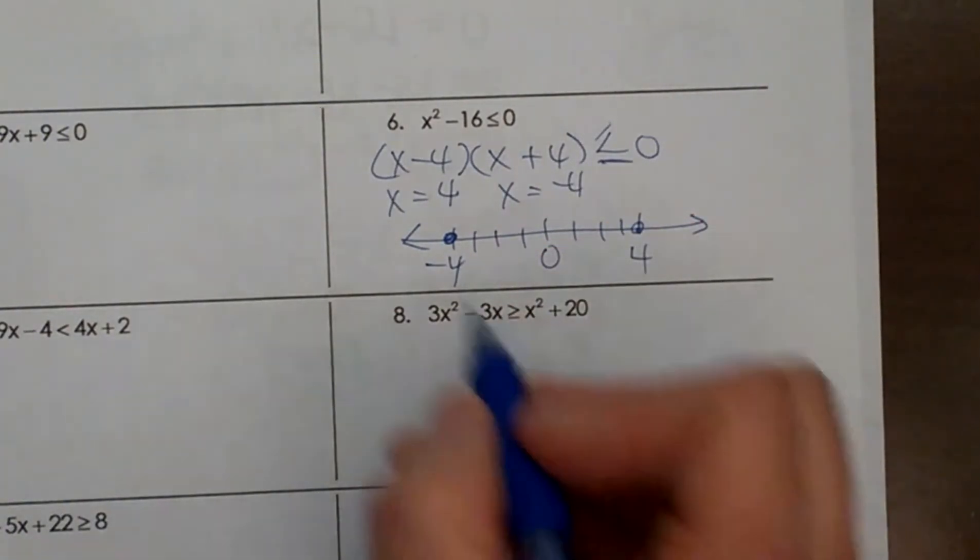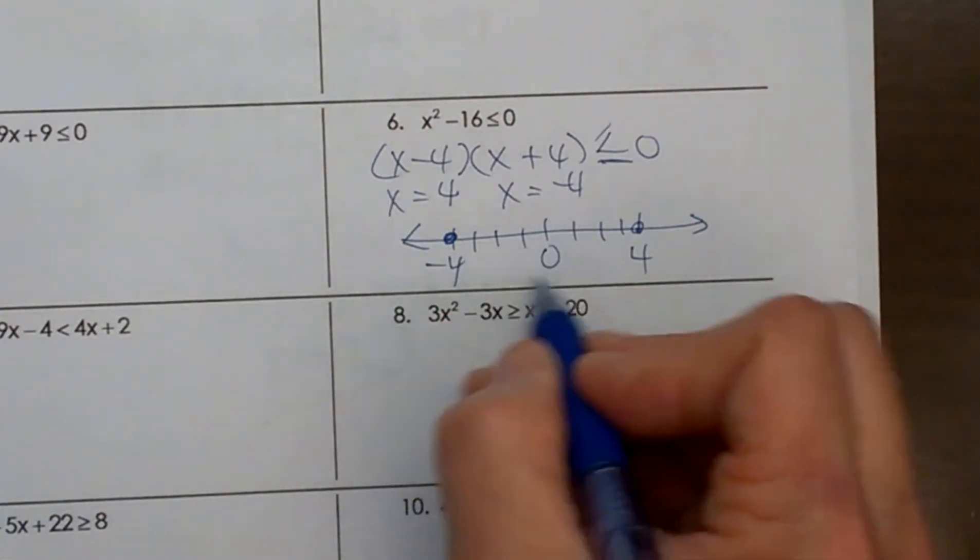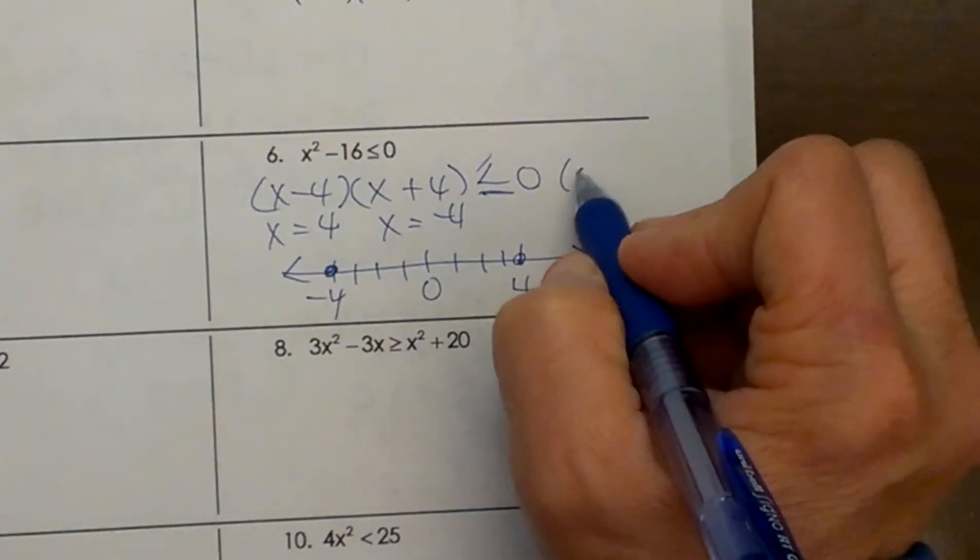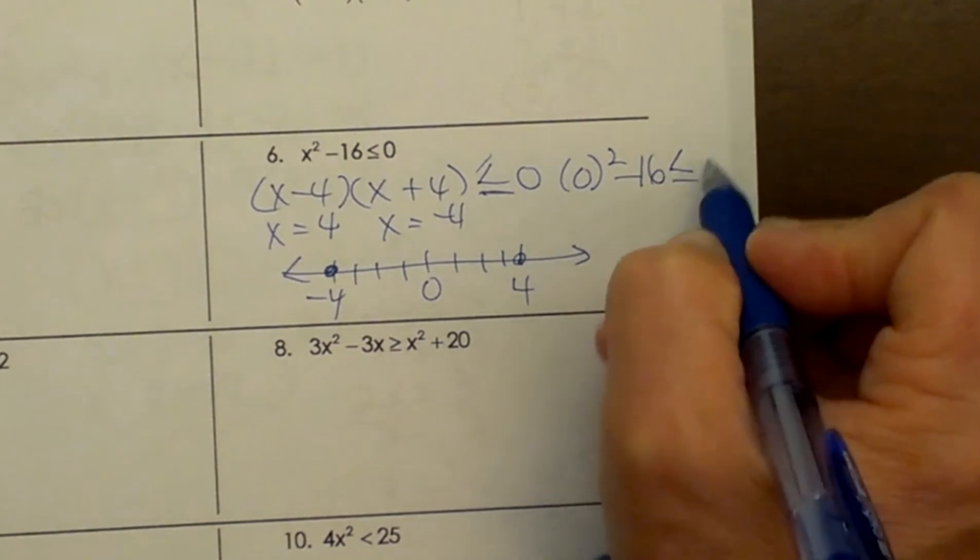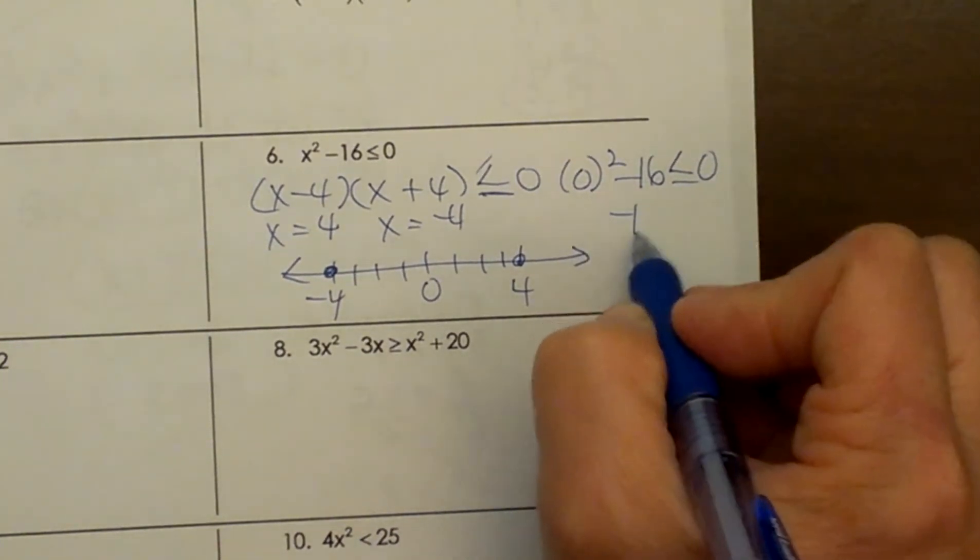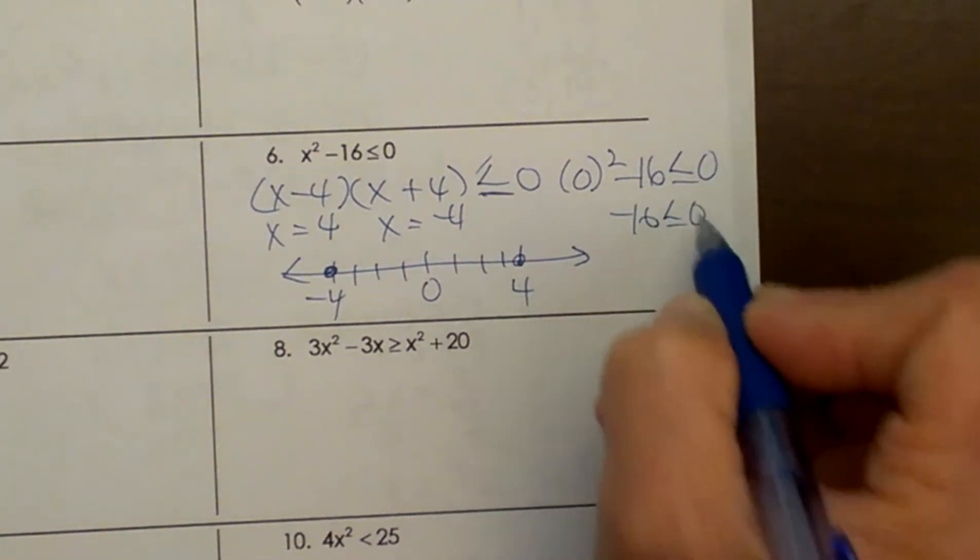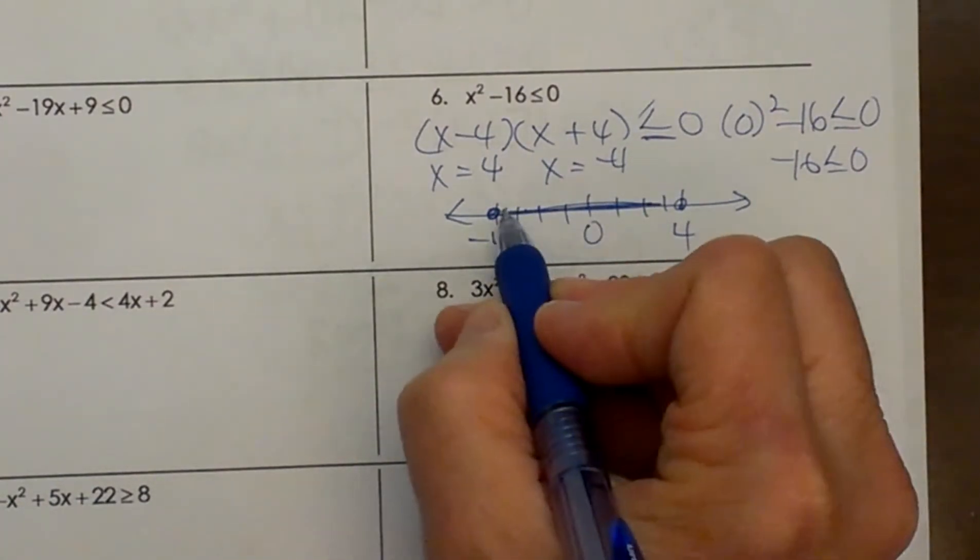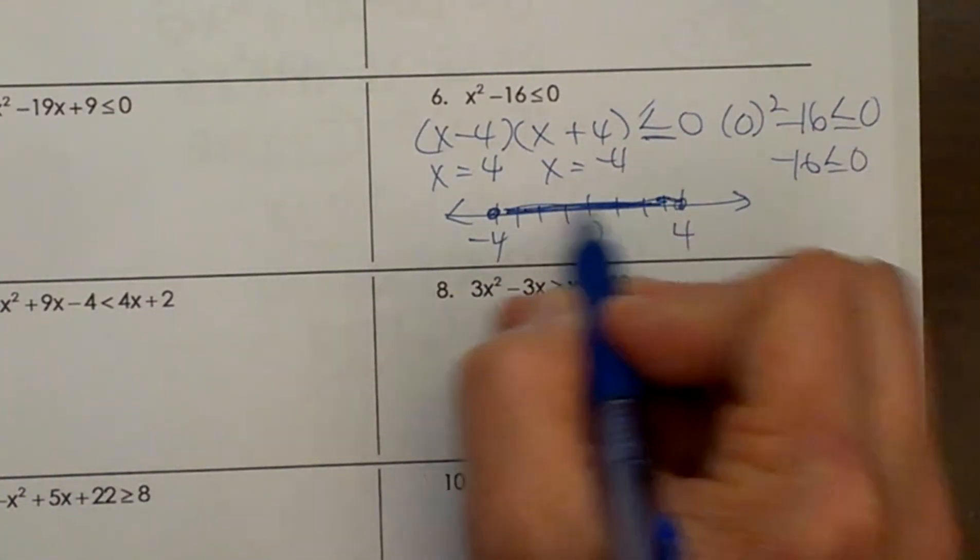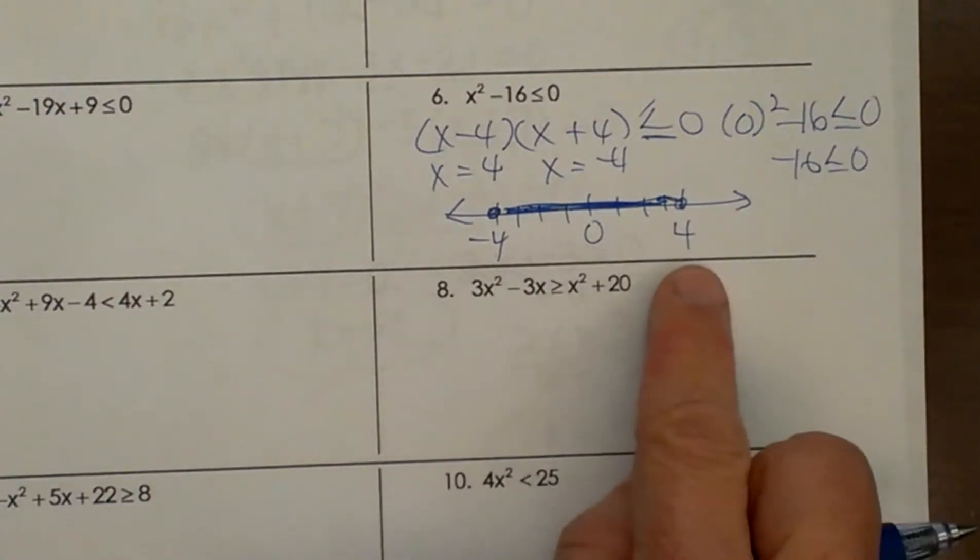And now let's test a point. Again 0 is between it. So 0 is a nice one to test. So let's plug in 0 squared minus 16. Is that less than or equal to 0? Negative 16. Is that less than 0? Yes. That one works. So that means where 0, the point I tested worked, that must be my shaded region. This is everything between negative 4 and positive 4.